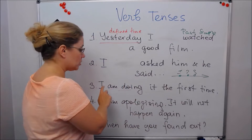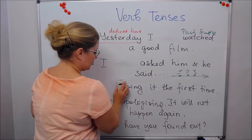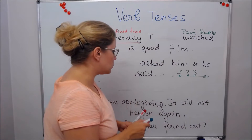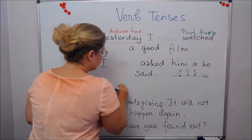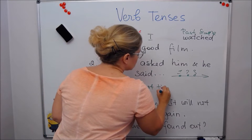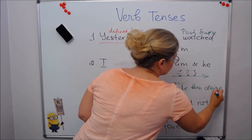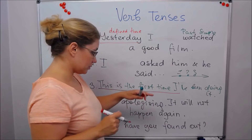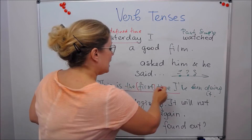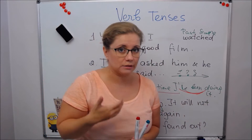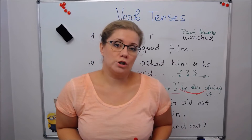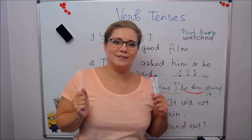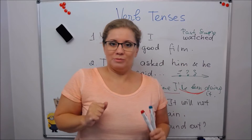That's why the whole structure needs to change. If you are talking about the first, second, or third time of doing something — about your experience — you say it like this: 'This is the first time I've been doing it.' Remember it as a set expression: 'This is the first time / the second time / the third time,' and then you use present perfect continuous if it's an unfinished action. For example: 'This is the first time I've been watching your video' — because you are telling me about your experience.